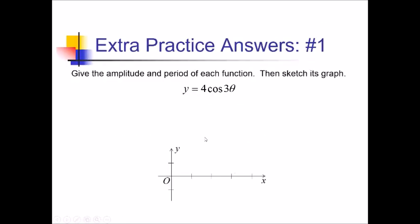For this problem, we want to find the amplitude and period of this function and then sketch the graph. The amplitude is the coefficient of the trig function, so this 4 right here. And for the period, that's going to be 2π divided by whatever the b value is here, so 2π over 3.